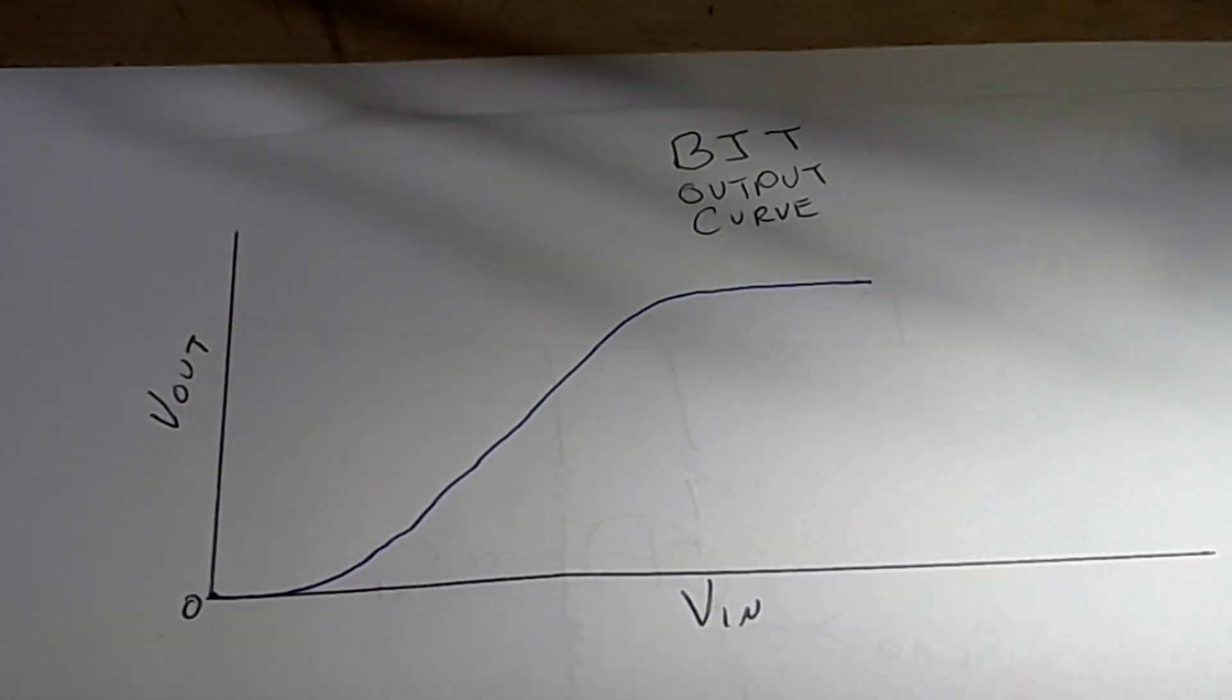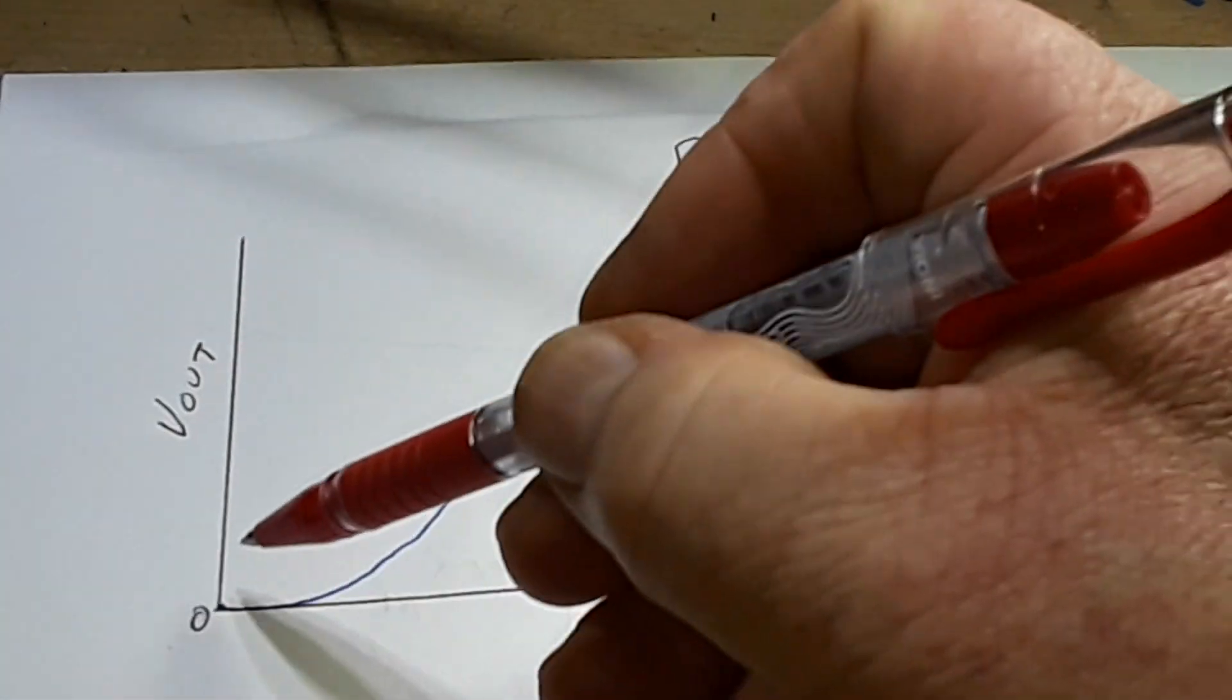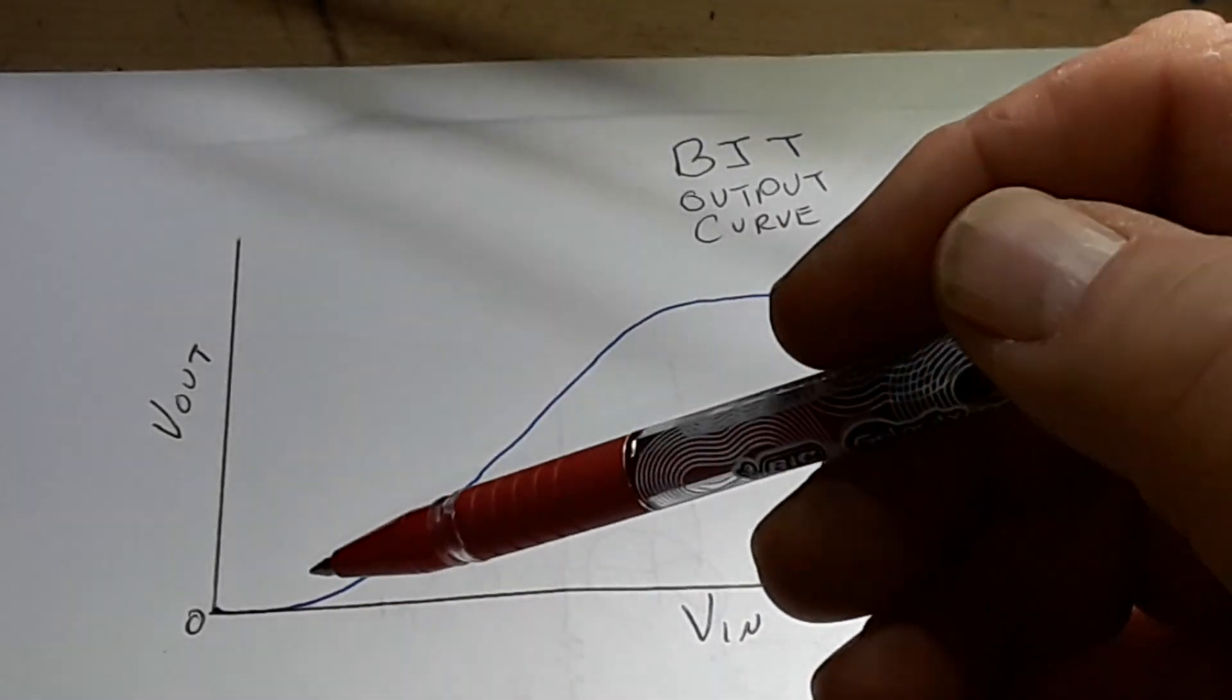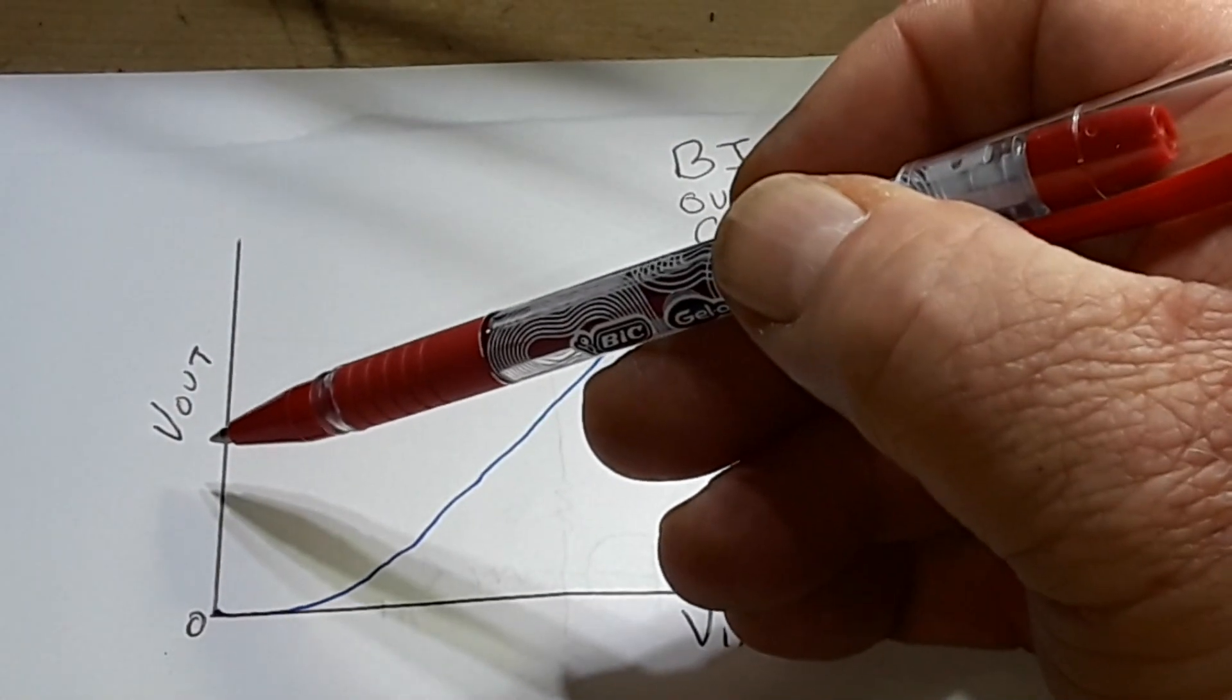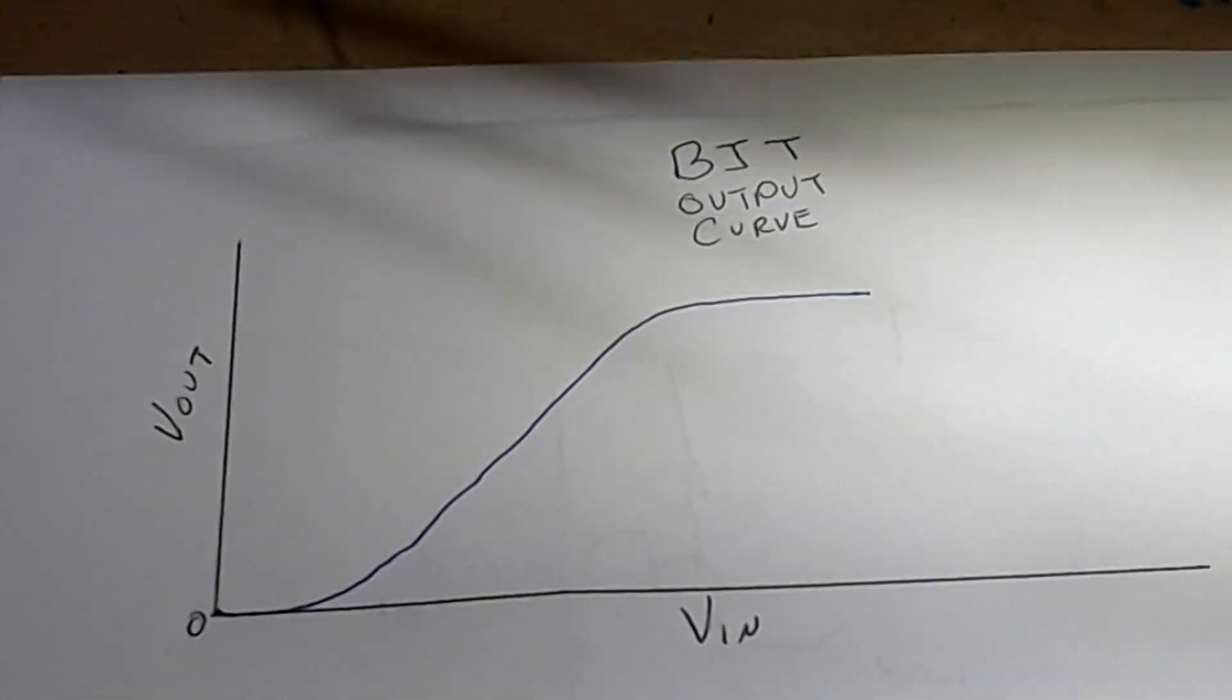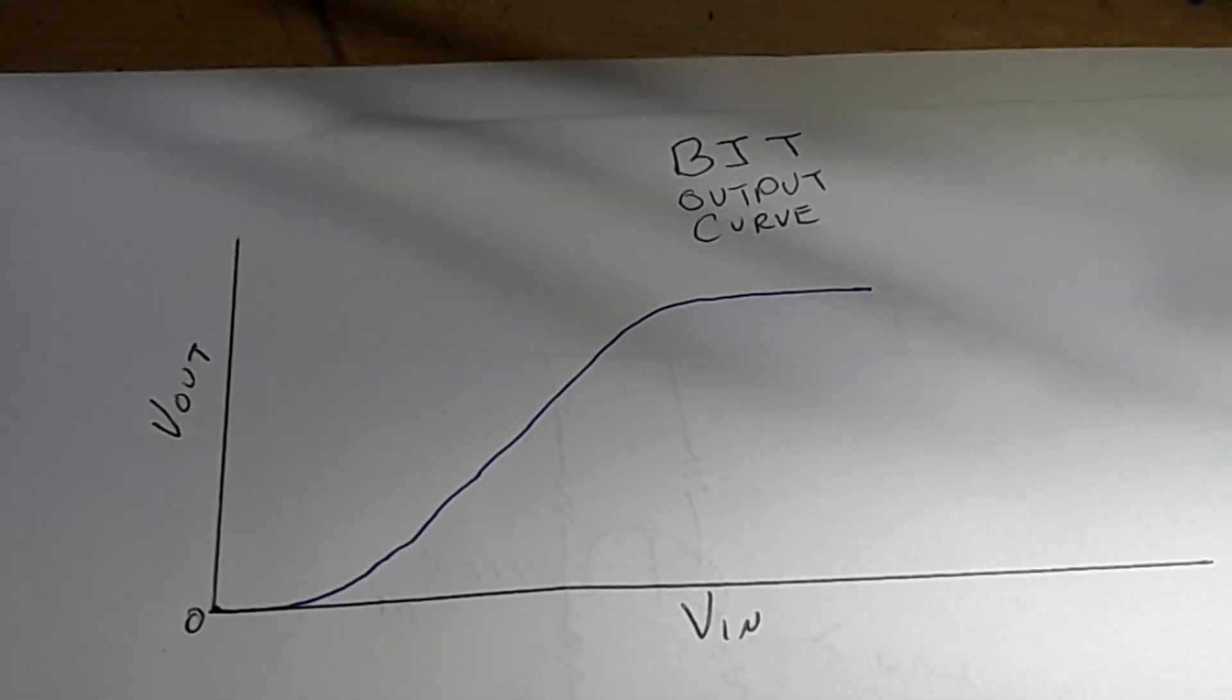So this is a typical transistor output curve. We're starting here with our V_out on the vertical scale and our voltage in on the horizontal, and they both start at zero. So with zero volts in, you're obviously going to get zero volts out.